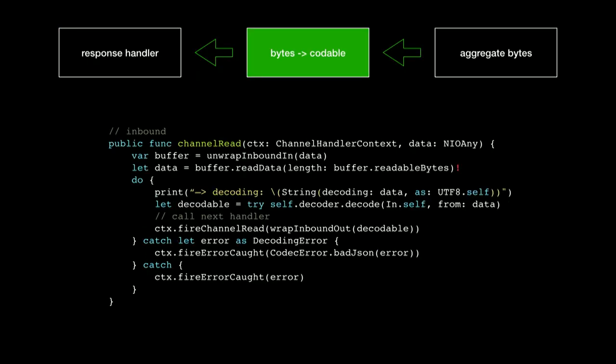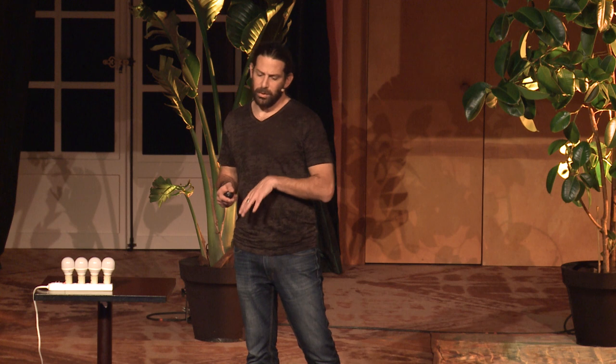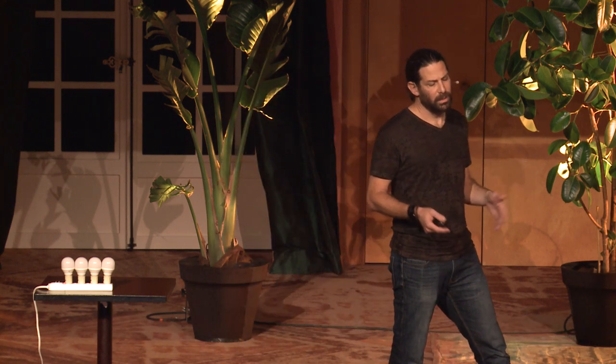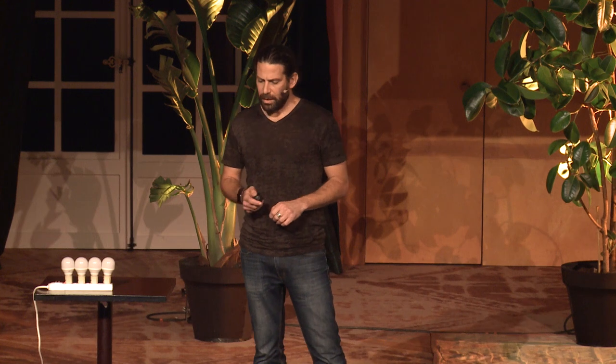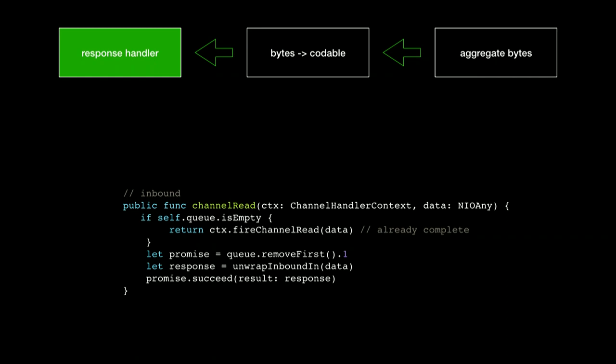As we get those bytes, we do the reverse of what we did before with the codable — we take these bytes and try to make them into an object, in this case the JSON response object. We use decode, and if the bytes are not valid JSON, we throw an error. Finally, we go back to the response handler on the client side, pop the promise from the queue — remember, we put the promise in the queue at the start — and take the response object we got, fulfilling the promise by calling promise.succeed.